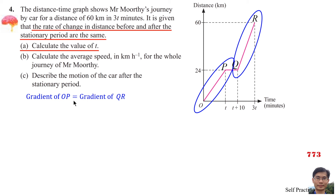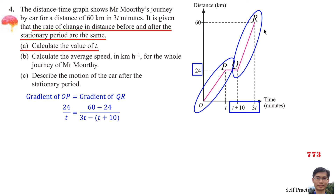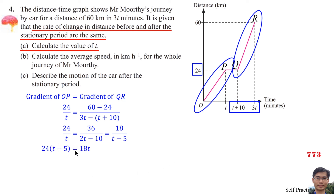Gradient of OP equals Gradient of QR. Gradient of OP equals 24 divided by T. Gradient of QR equals 60 minus 24, divided by 3T minus (T plus 10), which simplifies to 36 divided by 2T minus 10, or 18 divided by T minus 5. Setting them equal: 24 divided by T equals 18 divided by T minus 5. Cross-multiplying: 24T minus 120 equals 18T, so 6T equals 120, giving T equals 20.